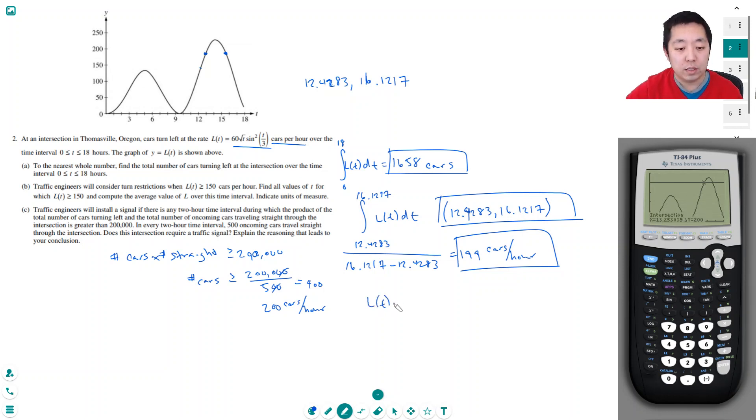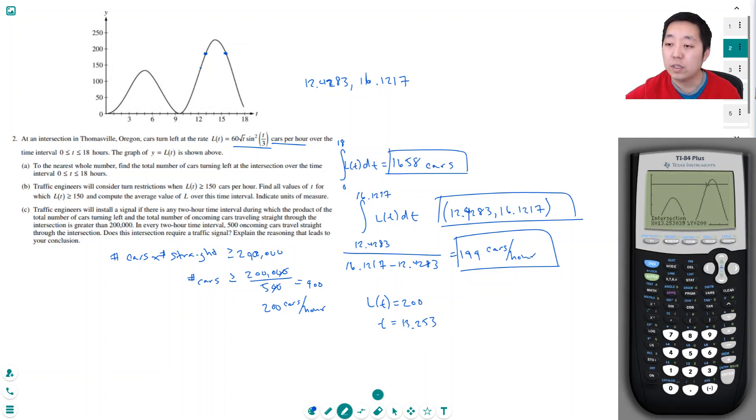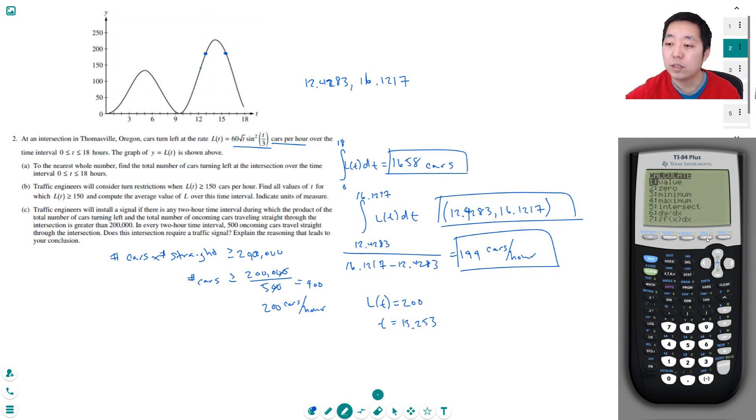Intersection between this curve and this curve, and my guess is somewhere over here. L(t) would equal 200 at two time intervals. t is equal to 13.253, and the other interval is, to get if you want the other intersection point, you put your guess like further closer to the right.